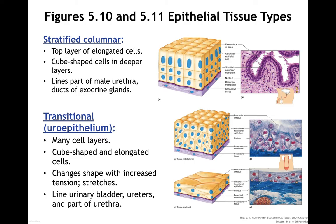We also have transitional epithelium, also called uroepithelium because it's part of the urogenital tract. It is many layers thick with cube-shaped and elongated cells, sometimes referred to as pillow cells. That allows them to change shape as the organ they are a part of fills with fluid. We'll find these in the urinary bladder, parts of the ureter, and the urethra.